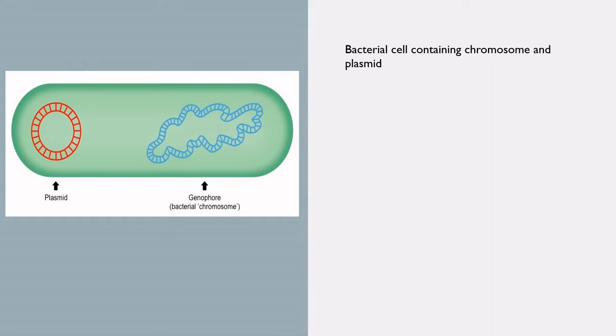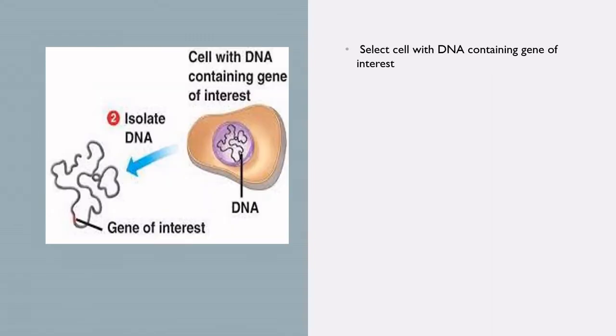Here we can see a bacterial cell containing a chromosome and a plasmid. A plasmid is a type of vector — it is a small, circular, double-stranded, extrachromosomal DNA molecule found in some bacterial species.